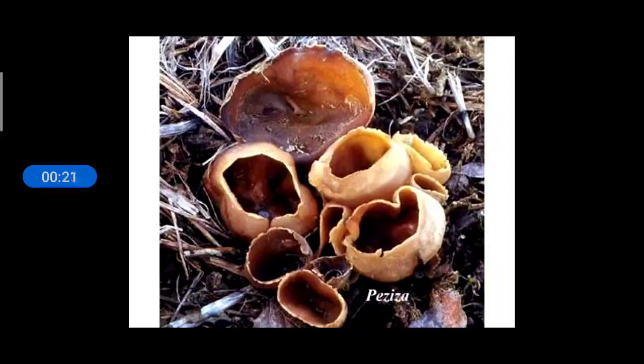In the second group, a fungus called Peziza is present. It has got a cup-like structure. And inside this cup, there is a sac in which sexual spores are present. So this group of fungus is called Sac Fungus. The name of the sac is Ascus. So they are also called Ascomycetes. This is the second group of fungus under kingdom fungi.